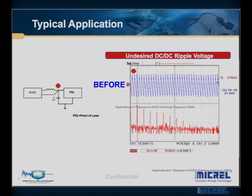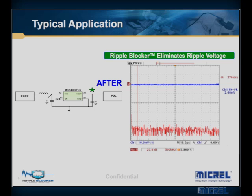Here's a typical example of what RippleBlocker does for you. Here is a basic DC-to-DC switching regulator feeding your end application or load before using RippleBlocker technology. As you can see, there is large attenuation of noise on the output. And here is your supply voltage after using RippleBlocker technology — notice that all the ripple voltage has been suppressed to your load. This is the key benefit of RippleBlocker technology.